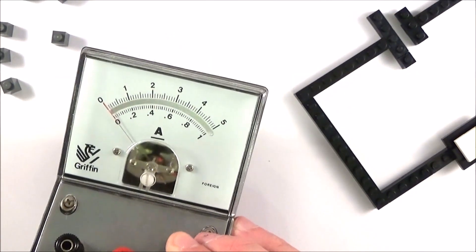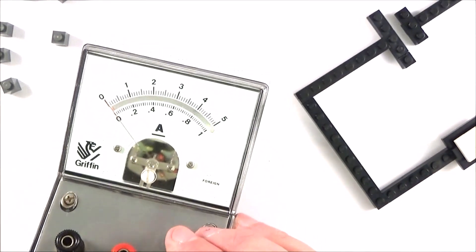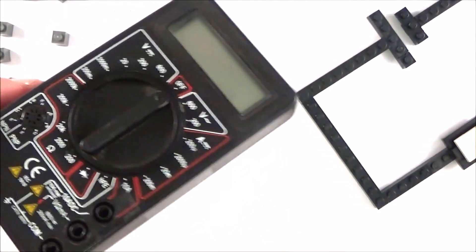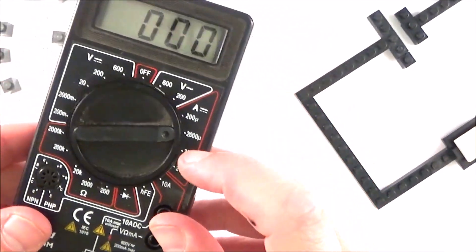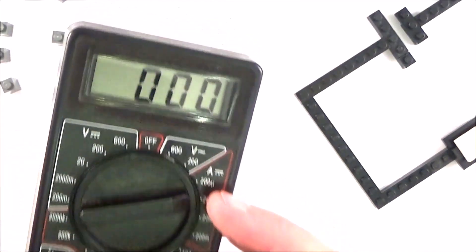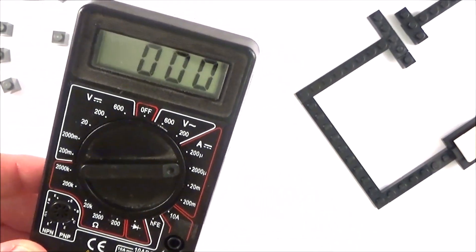So in order to actually measure the current, what we need is some kind of ammeter. It could be maybe an analog scale like the one here, or perhaps something maybe like a multimeter that we can set to be an ammeter using the dial here. And if we connect this into a circuit, it's really important that it goes in series with the rest of the parts in that circuit.